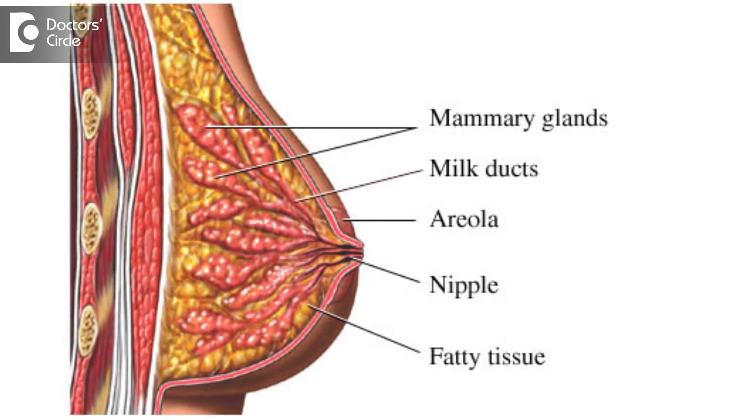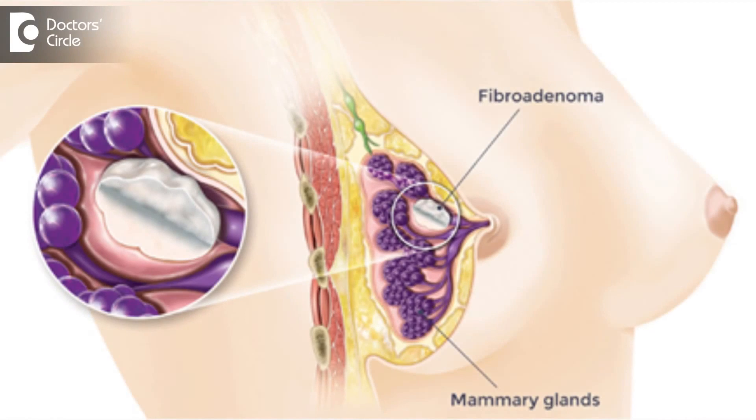To understand this disease, we have to know the anatomy of the breast. The breast has got lobules, ducts, and interlobular fat cells. When these lobules and ducts experience some hormonal imbalance, they lead to clumping of the breast tissue in the form of cysts, lobular formation, and fibroadenoma formation.